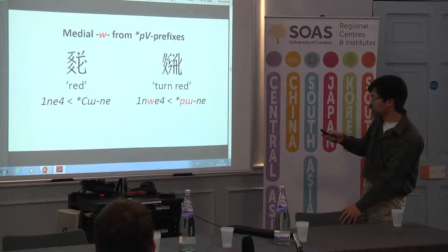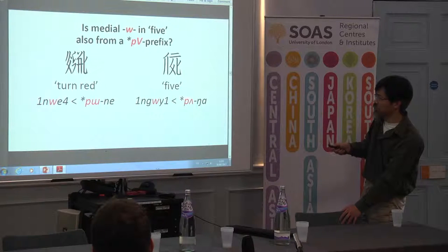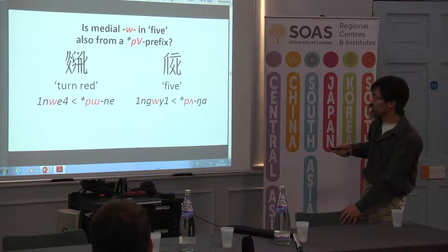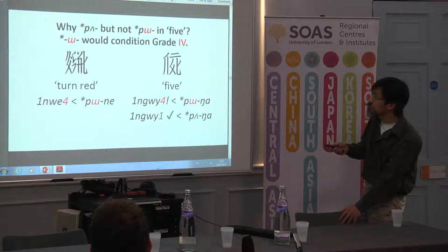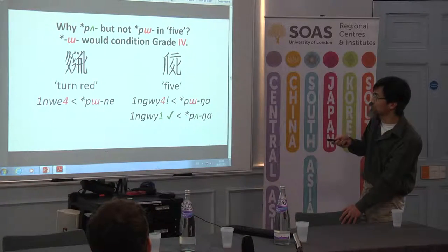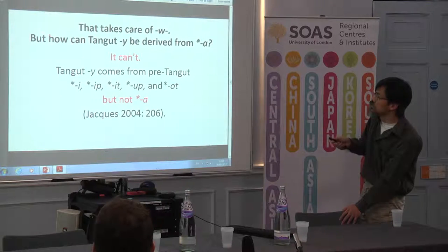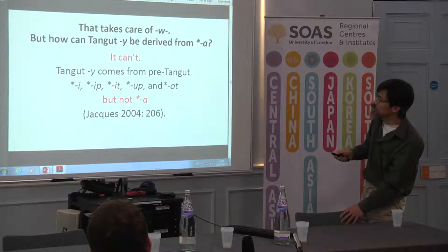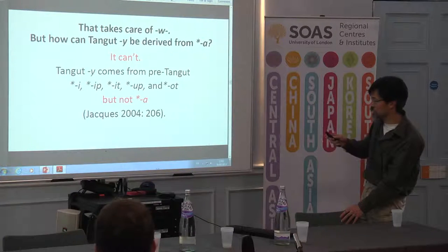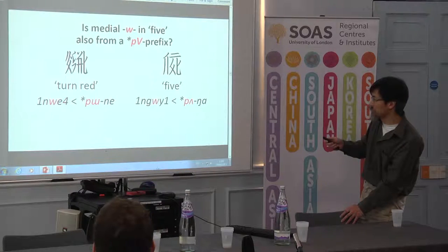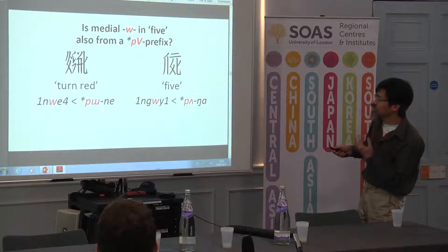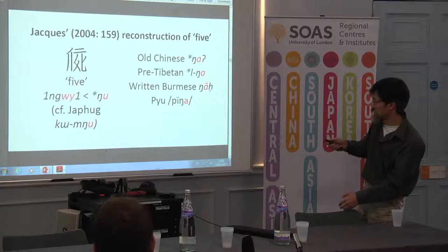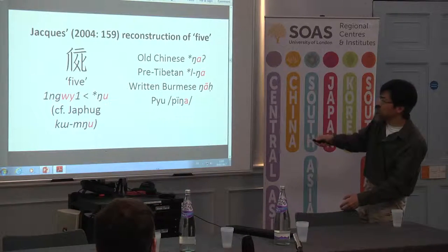But we're still stuck with the problem of the vowel: five has ü, and for the vowel it shouldn't. U cannot be derived from a. Guillaume Jacques' book on Tangut demonstrates that ü can have a whole bunch of different sources — i, ip, up, and ot — but not a. So we still have a problem here. How can my claim that five is related to all those other a-vowel words work if five has ü?